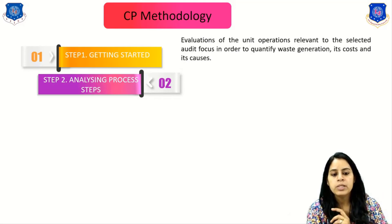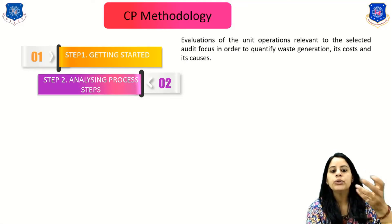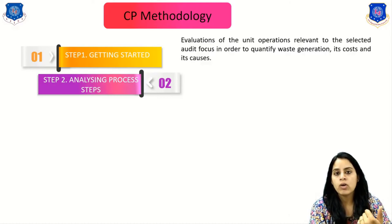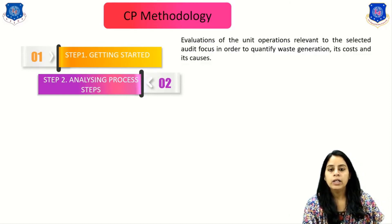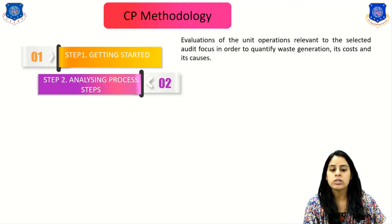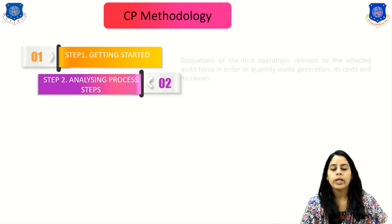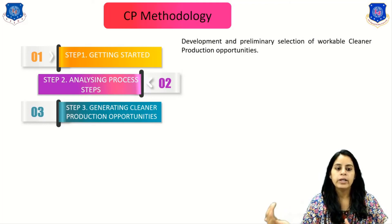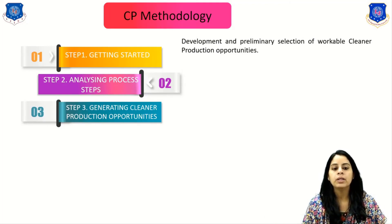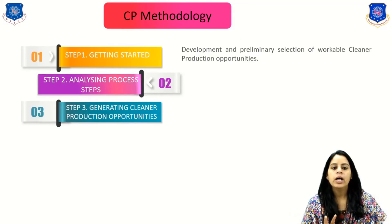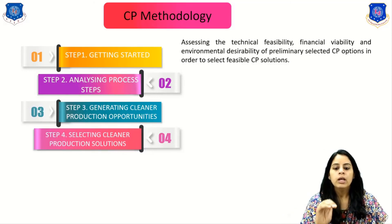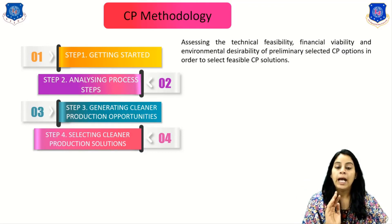Step two is analyzing the process — evaluating the unit operations relevant to the selected audit focus in order to quantify waste generation and its cost. After step one, we identify how much waste is being generated and its cost. Step three is generating cleaner production opportunities: the development and preliminary selection of workable cleaner production opportunities applicable to that industry. Step four is selecting cleaner production solutions.